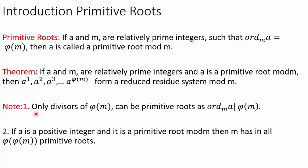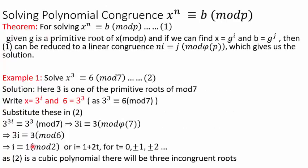You should note a few things. Only the divisors of φ(m) can be primitive roots, as the order of a mod m divides φ(m). And if a is a positive integer and it is a primitive root, then m has in all φ(φ(m)) primitive roots. Here we will be solving polynomial congruences of the type x^n ≡ b (mod p). We will look at the theorem which helps us in solving such congruences.